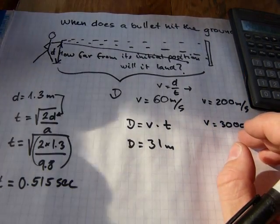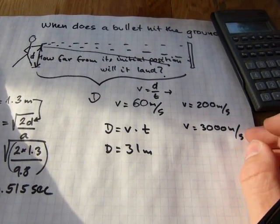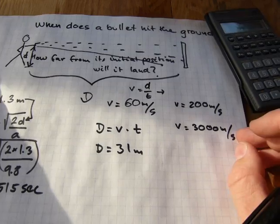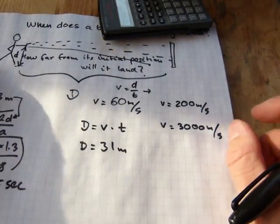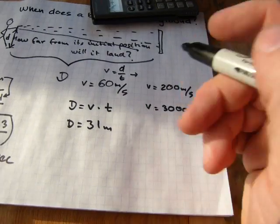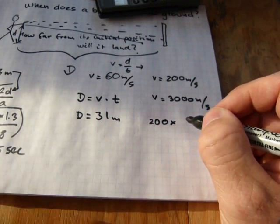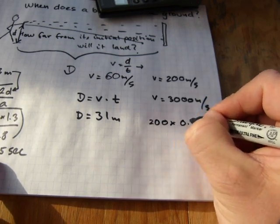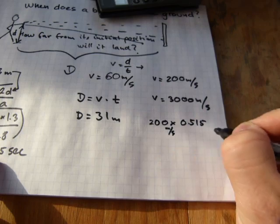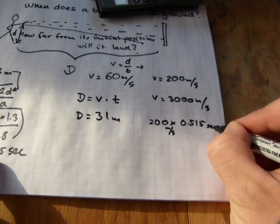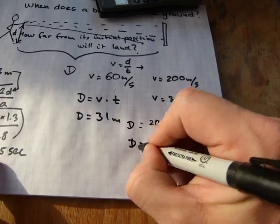It doesn't matter how much the bullet weighs, but it does matter how fast it is traveling. It will hit the ground at 31 meters when it's fired horizontally. If it's traveling at 200 meters per second, it's 200 multiplied by this time here, 200 meters per second multiplied by so many seconds, and will give us a distance.